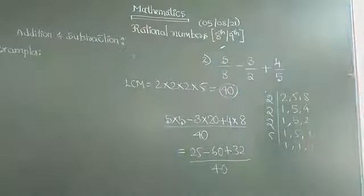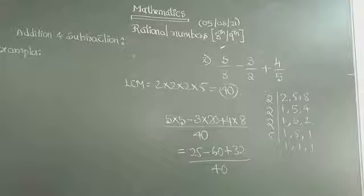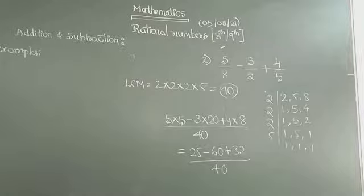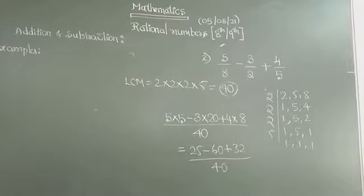Take care of signs, whether addition is there or subtraction is there. 25 and 32 can be added further, then subtract with minus 60. You get the answer. 32 plus 25 is 57, 57 minus 60 becomes minus 3. You got minus 3 by 40. This is what you can do for addition and subtraction. Do three more problems on your own and solve them.